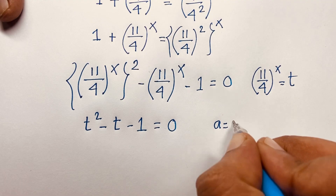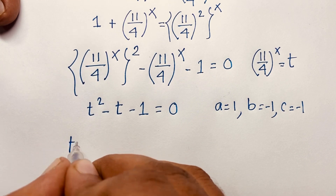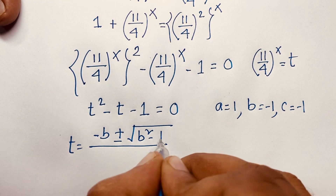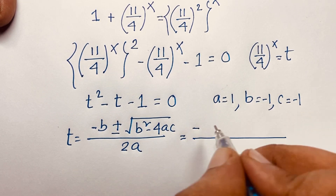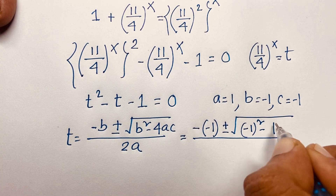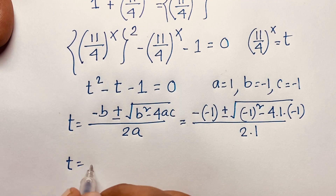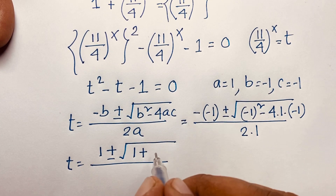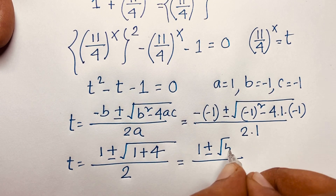This is a nice quadratic equation where a equals 1, b equals negative 1, and c equals negative 1. Using the quadratic formula, t equals (minus b plus or minus square root of b^2 minus 4ac) over 2a. Substituting: t equals (1 plus or minus square root of 1 plus 4) over 2, which gives t equals (1 plus or minus square root of 5) over 2.